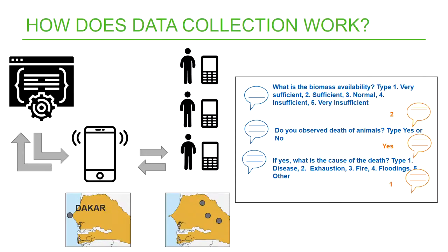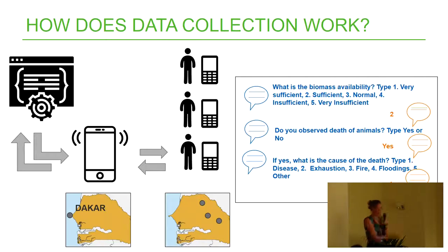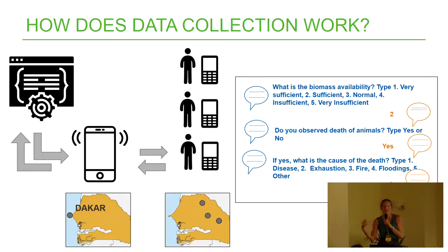We have the Telerivet server, and one smartphone in each country connected to the internet. This smartphone acts as the link between the server and the SMS sending. Each Thursday — the survey day — the server sends a request to the smartphone, which then starts sending SMS to the data collectors who are in the field without any internet access. The conversation looks like: the smartphone asks 'What's the biomass availability? Type 1 if very sufficient, 2 if sufficient,' etc. The data collector replies with a number, and automatically the system sends the next SMS. Some questions are conditional — for example, if they answer yes to 'Do you observe animal deaths?', the system then asks for the cause.